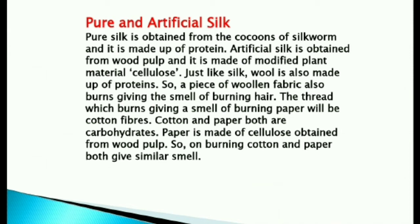Pure silk is obtained from the cocoons of silkworms and is made up of protein. Artificial silk is obtained from wood pulp and is made up of modified plant material cellulose. Just like silk, wool is also made up of proteins. A piece of wool fabric also burns giving the smell of burning hair. The thread which burns and gives a smell of burning paper will be cotton fibres. Cotton and paper are both carbohydrates. Paper is made up of cellulose obtained from wood pulp, so on burning, cotton and paper both give a similar smell.